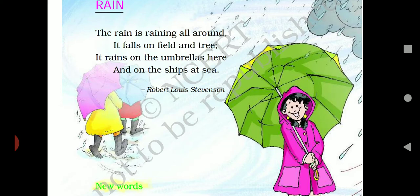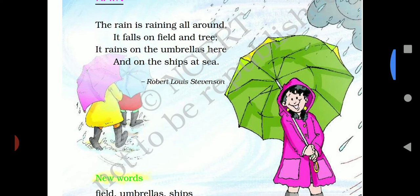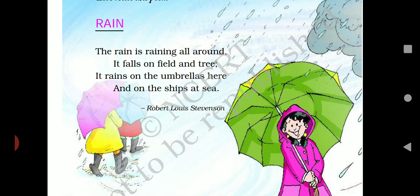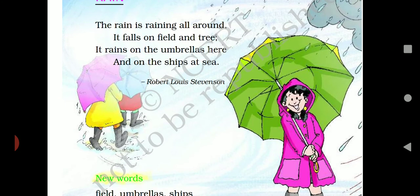The rain is raining all around. Okay, students? So you can see it in the picture. Look, the rain is raining on the umbrellas, in the fields. So all the rain is raining.